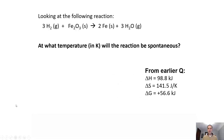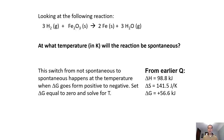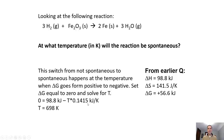Hopefully you've had a chance to do that. When this switches from non-spontaneous to spontaneous, delta G goes from positive to negative, which means it passes through zero. So we set delta G equal to zero and put in our 98.8 kilojoules, minus T times the delta S value already converted to kilojoules per Kelvin. Solving that gives a value of 698 Kelvin — about 700 degrees — which turns out to be quite warm.